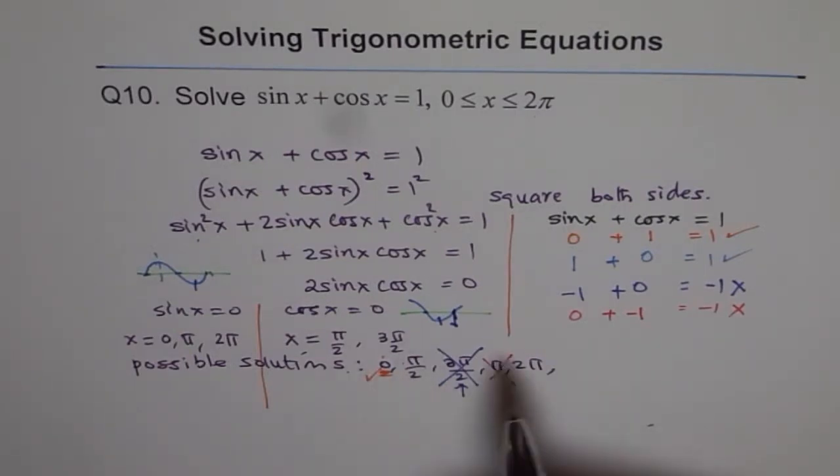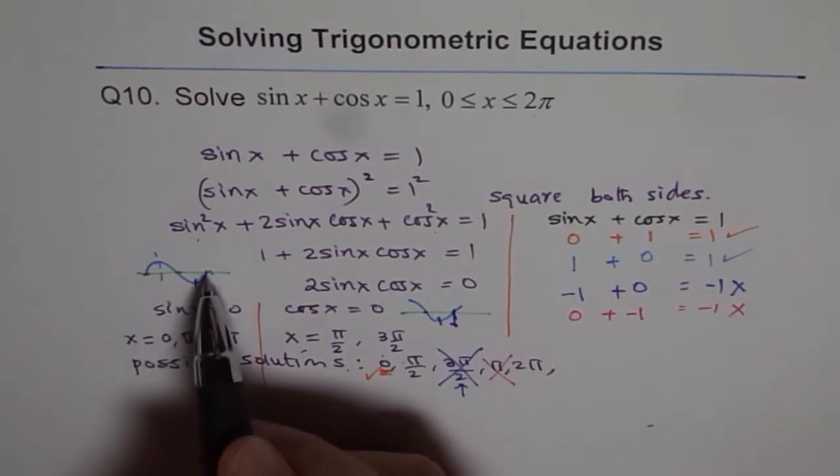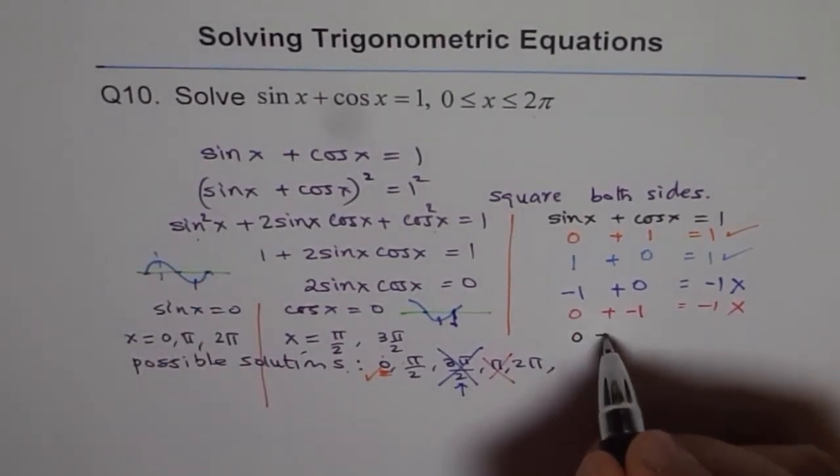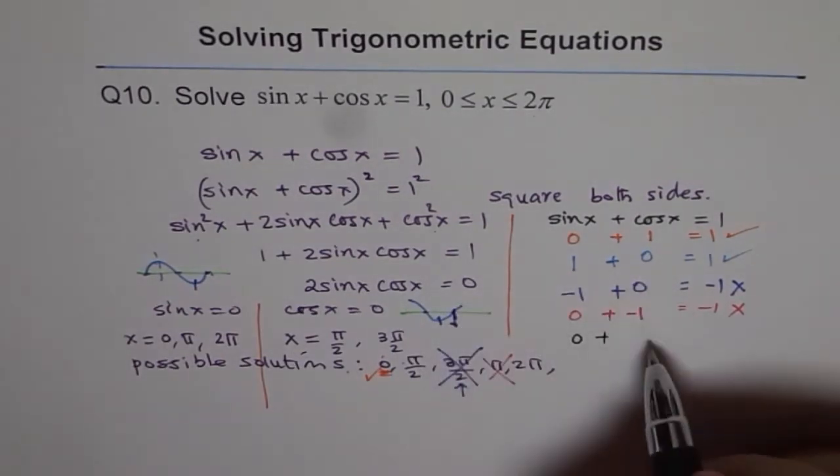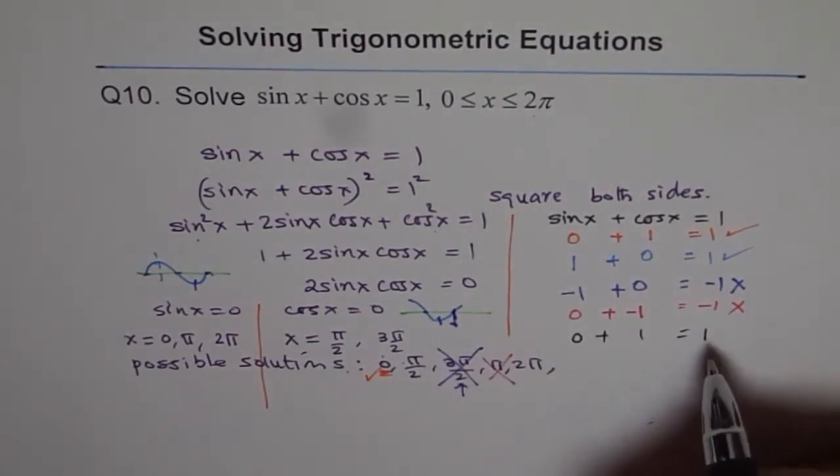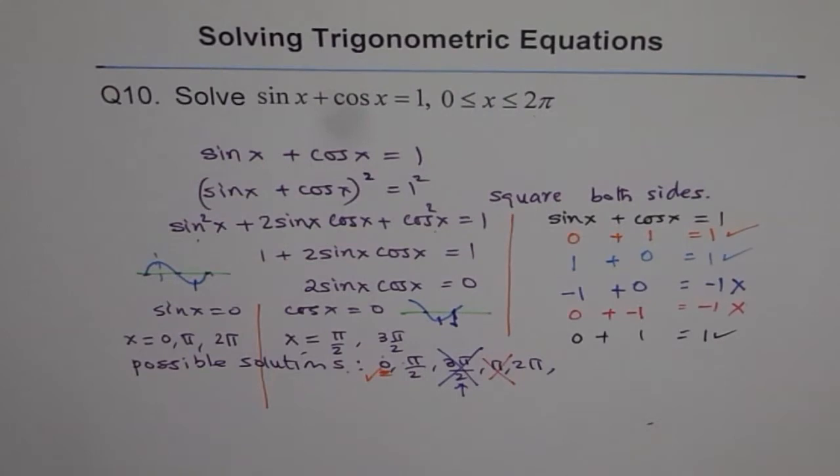Last, 2π. 2π sin is 0 for us, plus cos of 2π is 1. And that is good enough. That is correct. So we basically get out of 5, 3 correct roots.